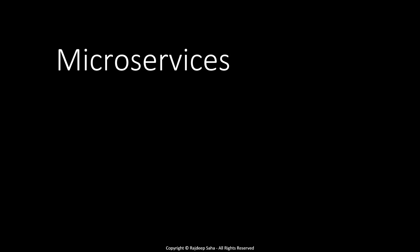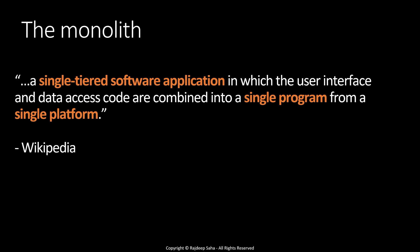Before we learn about microservices, let's take a look at the elephant in the room — the monolith. A monolith is a single-tiered software application in which the user interface and data access code are combined into a single program from a single platform. Some examples of a monolith are a single Java JAR file which handles business logic for different areas of your project, or a COBOL program handling different functionalities.